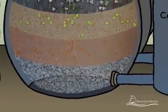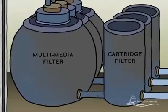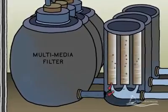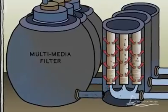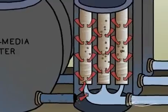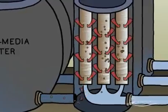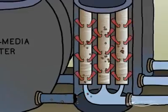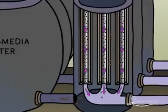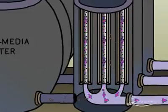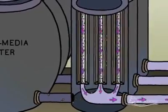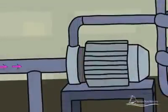Next, the filtered seawater travels to the cartridge filters, which act as a second stage of filtration. Cartridge filters used for seawater reverse osmosis are typically made from a yarn-like synthetic material that is wound into cartridges. These remove even smaller solid particles from the seawater, such as fine sand and clay, before the seawater proceeds to the reverse osmosis membranes.